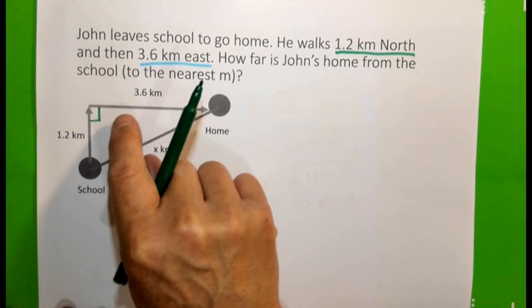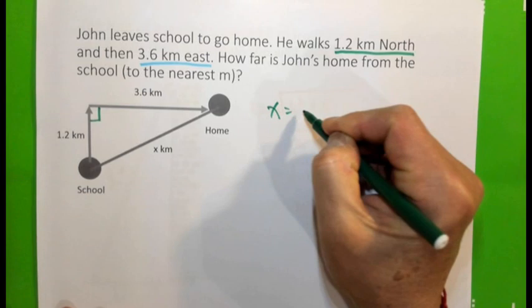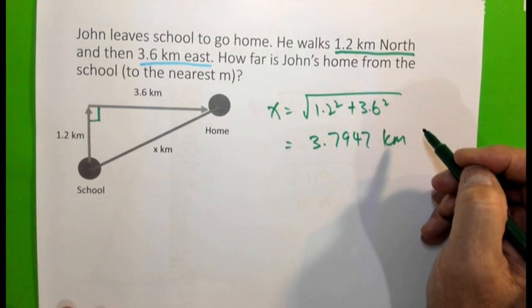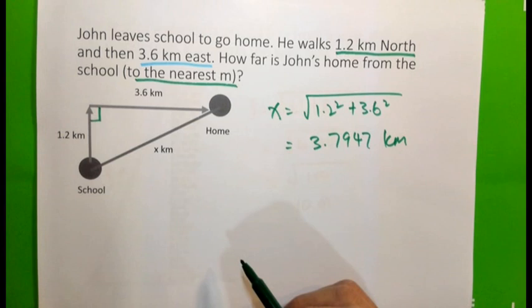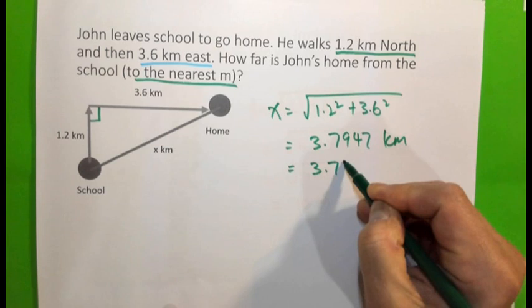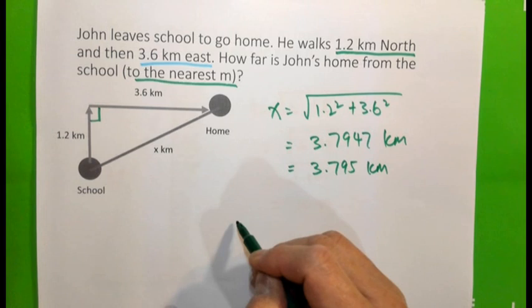x kilometres is actually square root of 1.2 squared plus 3.6 squared. So, x equals the square root of 1.2 squared plus 3.6 squared, and that is 3.7947 kilometres. But we need to know to the nearest metres. We know 1 kilometre is 1,000 metres. Therefore...